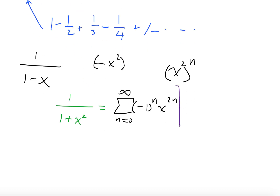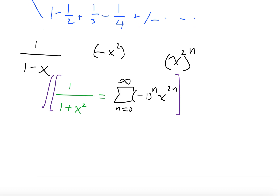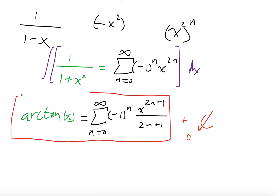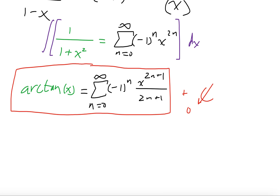Integrating both sides again: the integral of 1 over 1 plus x² is arctan(x). Using linearity of the integral, (minus 1)^n is a constant pulled out, and x^(2n) integrates to x^(2n+1) over (2n+1). Plugging in 0 to both sides gives 0, so the constant C is 0. You can think of arctan(x) as the generating function encoding the alternating reciprocals of odd numbers.